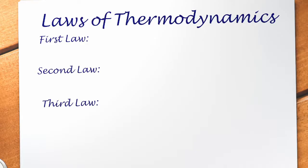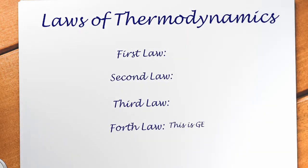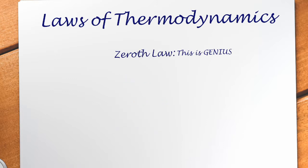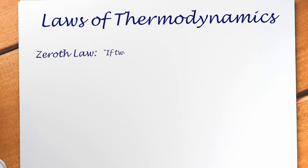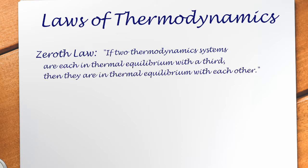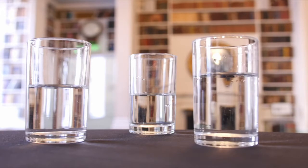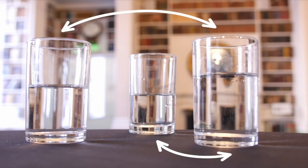So you bared with me and made it to the end, and you're still wondering — what in the world is the zeroth law of thermodynamics? Well, we had the first three laws, then they came up with this one and thought it was more important, so they stuck it at the front. Basically, it means that if two thermodynamic systems are each in thermal equilibrium with a third, then they are in thermal equilibrium with each other. So if A equals B and B equals C, then A equals C — basically, all heat is of the same kind.